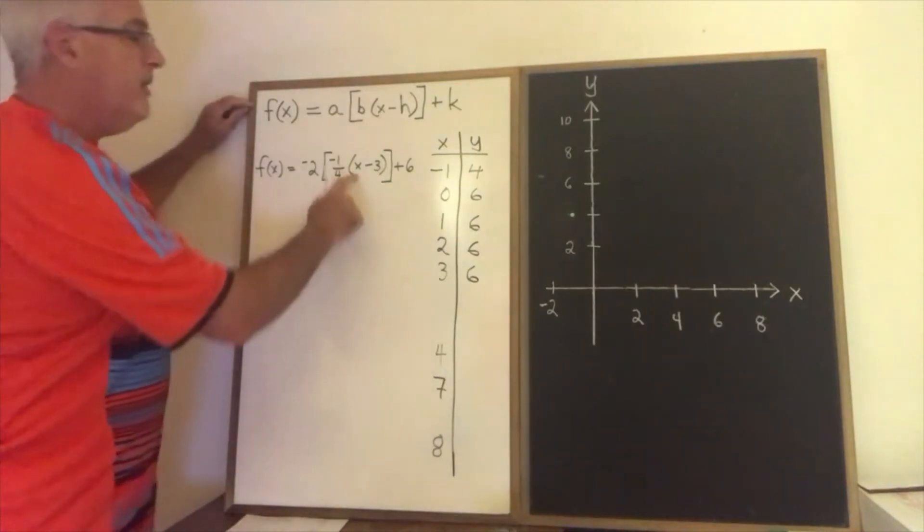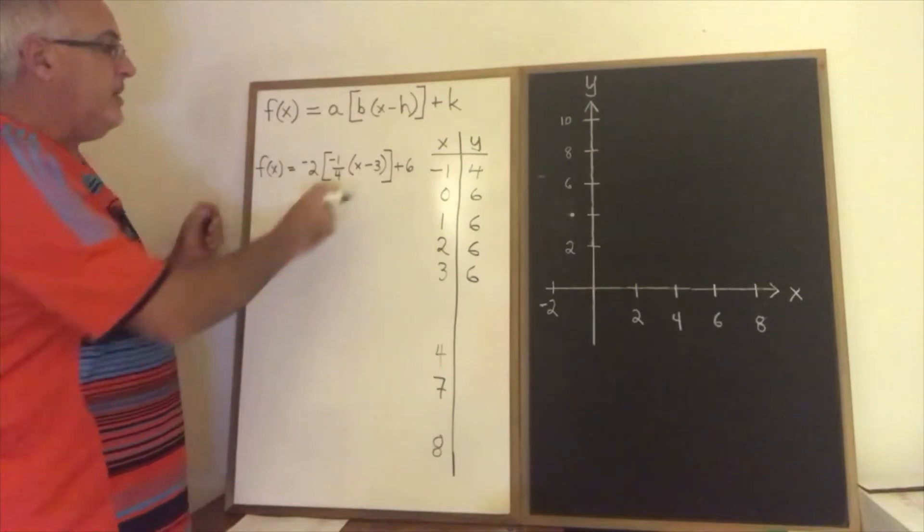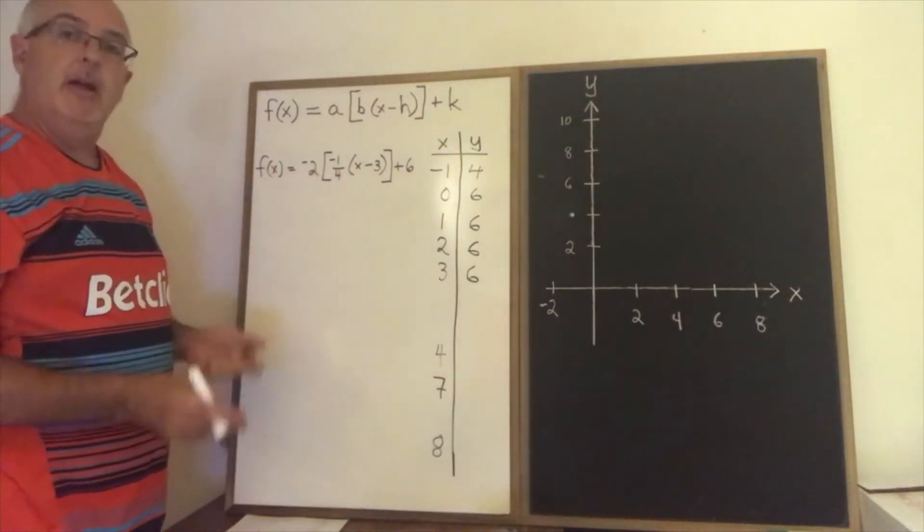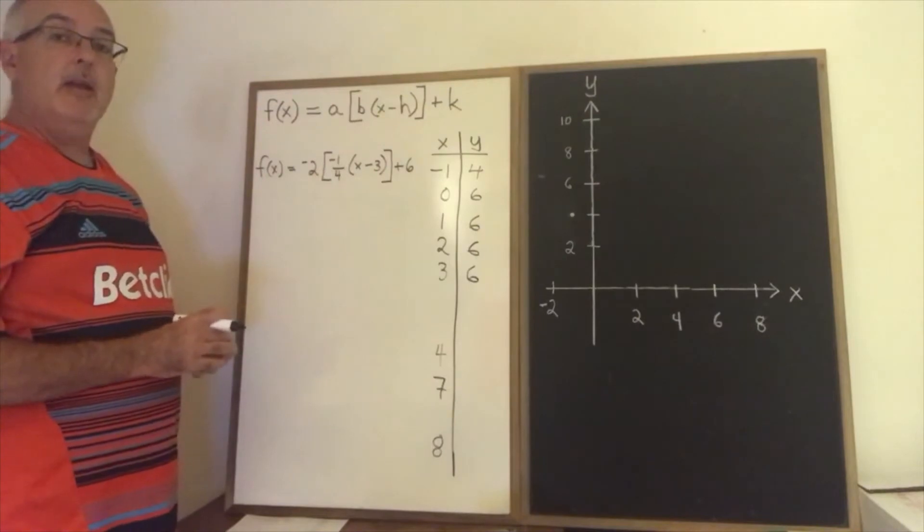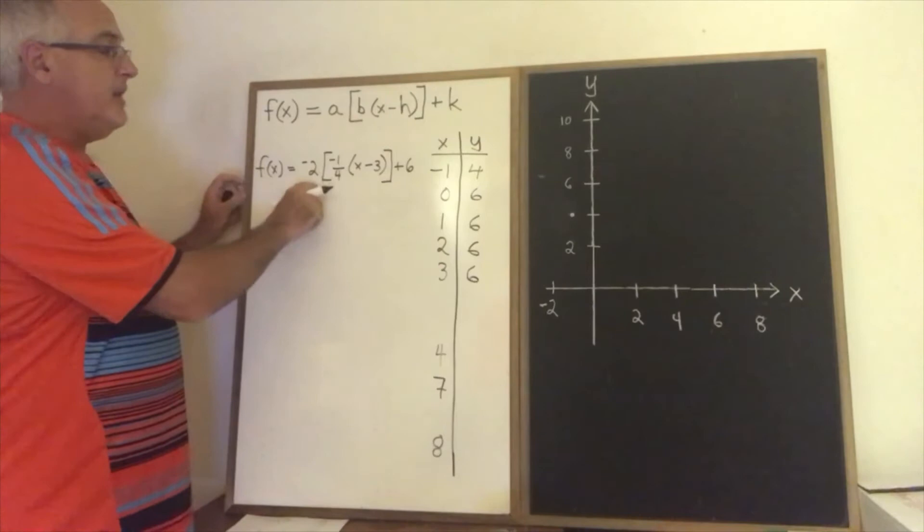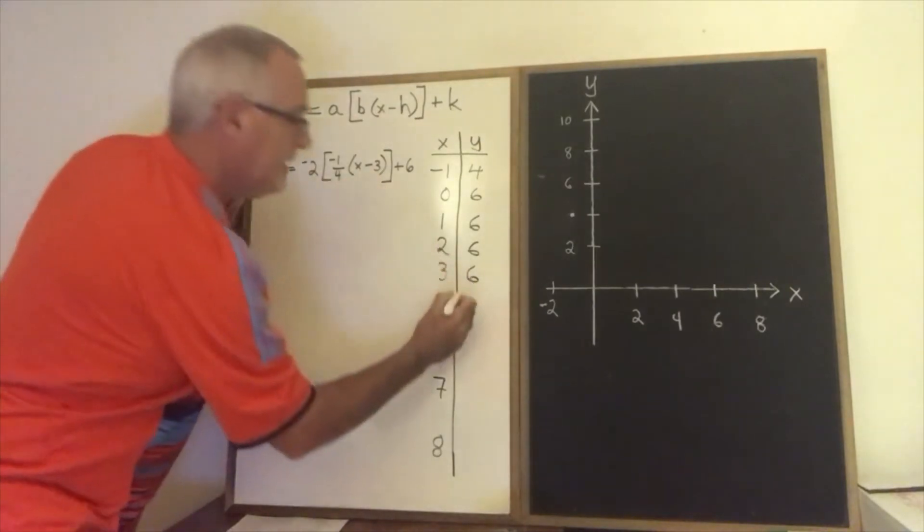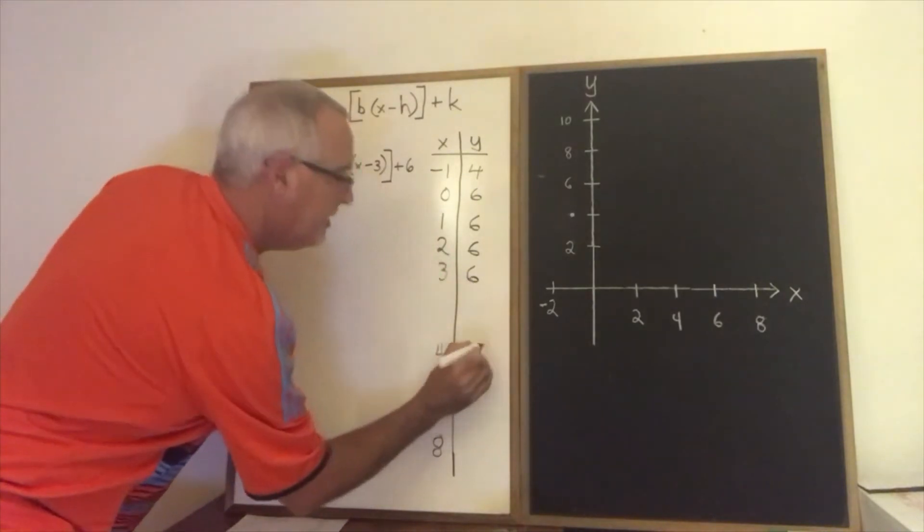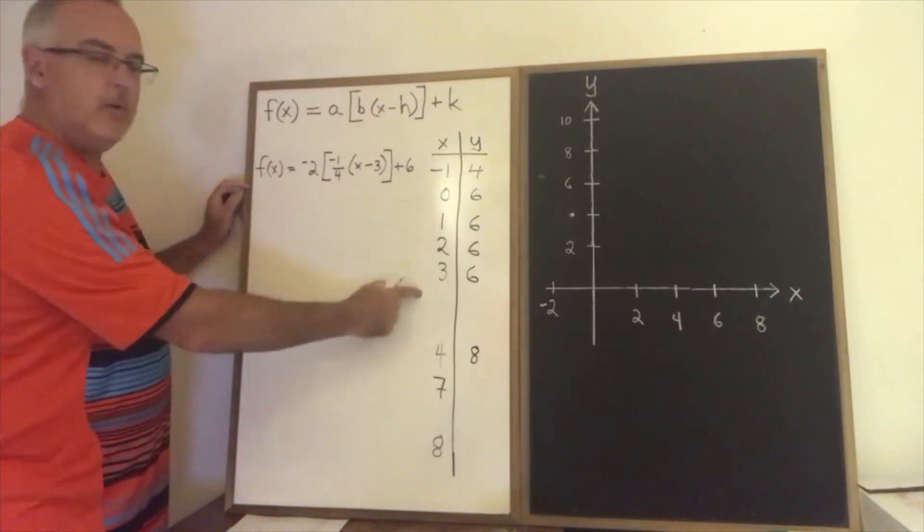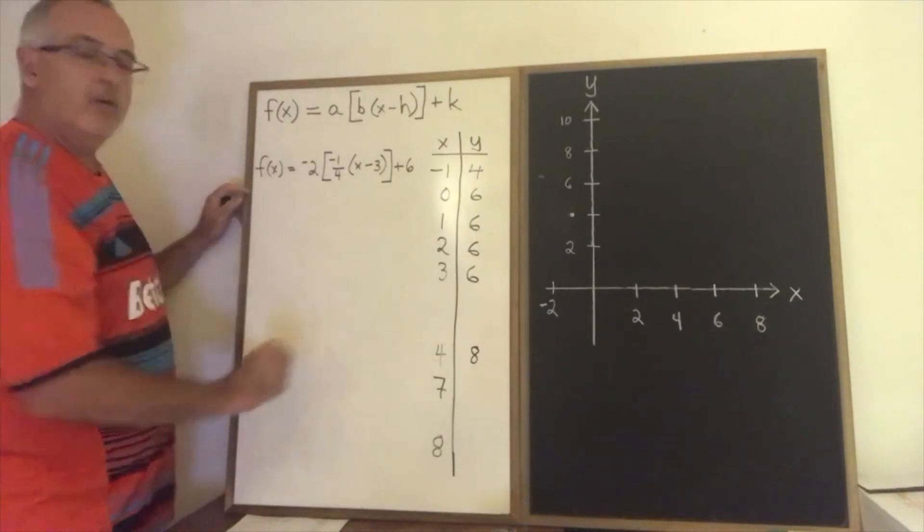But if x is 4, 4 minus 3 is positive 1. Positive 1 times negative 1 quarter is negative 1 quarter or negative 0.25. The greatest integer less than or equal to that on the number line though is negative 1. Negative 1 times negative 2 is positive 2 plus 6 is 8. Now I'm going to jump over 5 and 6 because I see this repetition happening. And I'm going to try 7.